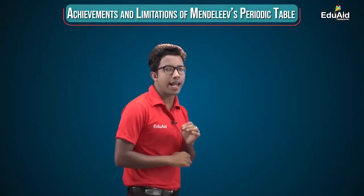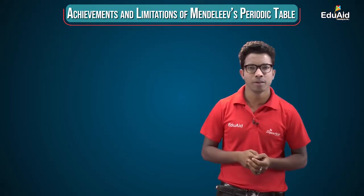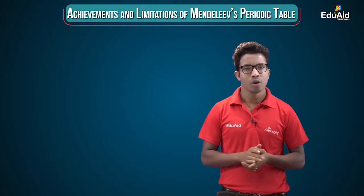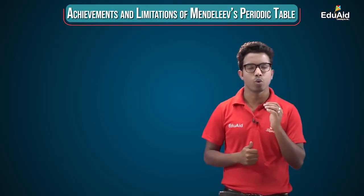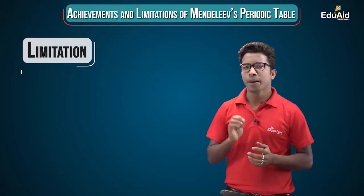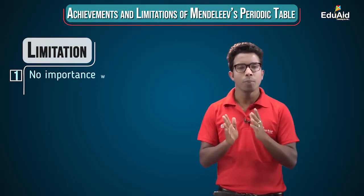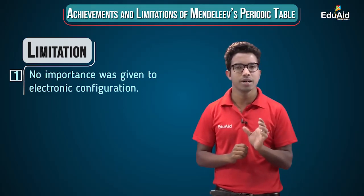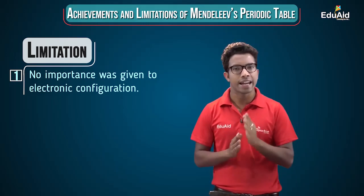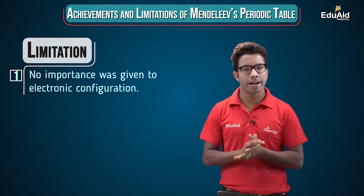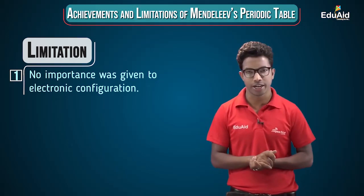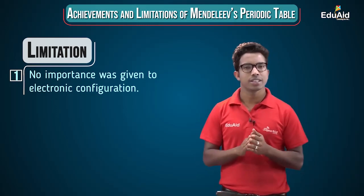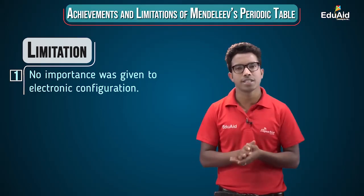Apart from its advantages, there are certain limitations associated with Mendeleev's periodic table. The first limitation is that no importance was given to electronic configuration — the pattern in which electrons are distributed in an element. Because of this, in certain cases, elements with different properties are placed in the same group.